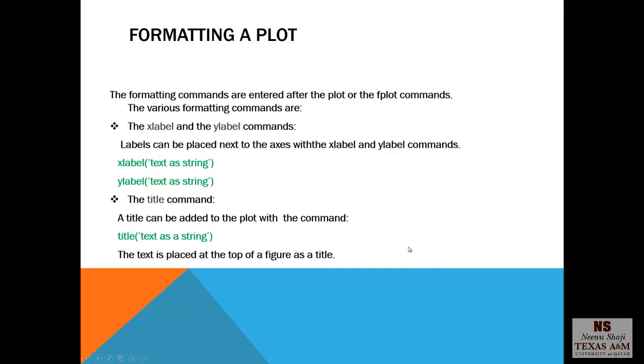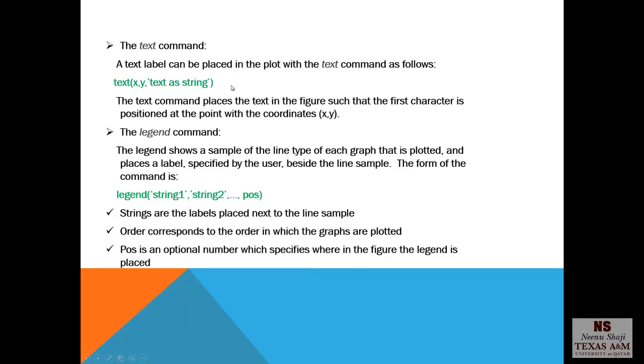Formatting a plot. The formatting commands are entered after the plot or the fplot commands. The various formatting commands are the xlabel, ylabel, which is used to label the axis. So you type xlabel and then the label that you want to put as a string. Similarly, the ylabel. Title command also works the same way. It puts a title for your plot. The text is placed at the top of a figure as a title. The text command. A text label can be placed in the plot with the text command as follows. Text x, y, text as a string. The text command places the text in the figure such that the first character is positioned at the point with the coordinates x, y.